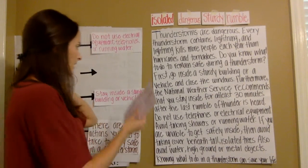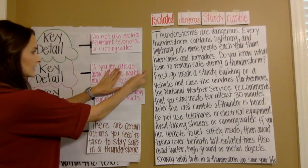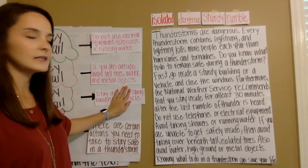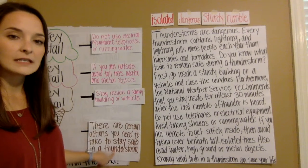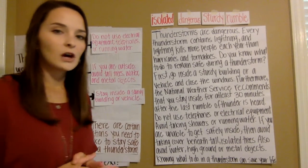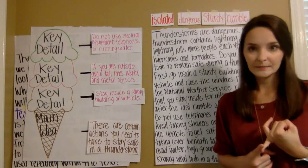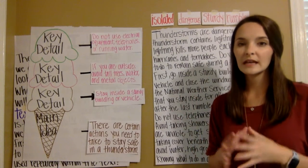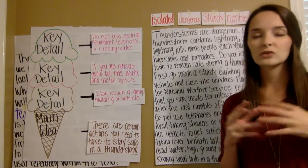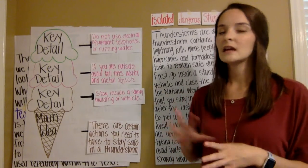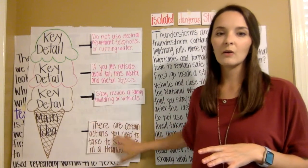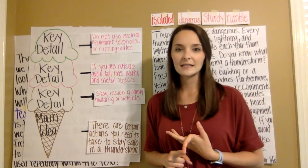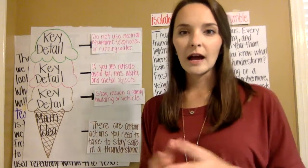Avoid means to stay away from. So we're going to put it here as our middle ice cream scoop. You can have these three details in any order and it's still correct, because all three details support that there are actions you need to take to stay safe in a thunderstorm. So today we have reviewed what main idea is. Main idea is with informational text and it tells us what the story is mostly about. Anytime you find an informational text — a story that is true and has all facts — try using the ice cream cone method to figure out what it's mostly about. Look for clue words, look at the pictures and the title, and look at the first and last sentence for a clue. Now go try it with an informational text!